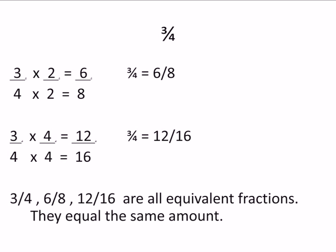And I did another example for you. 3 fourths times 1. And this time I wrote 4 over 4 for my 1. 3 times 4 is 12. 4 times 4 is 16. 3 fourths equals 12 sixteenths. So 3 fourths equals 6 eighths equals 12 sixteenths. They're all the same amount. They're all equivalent fractions.